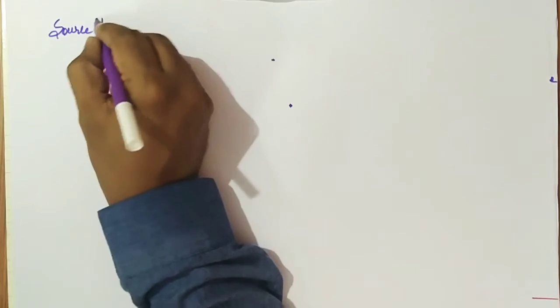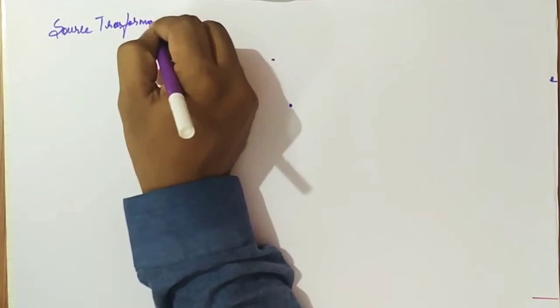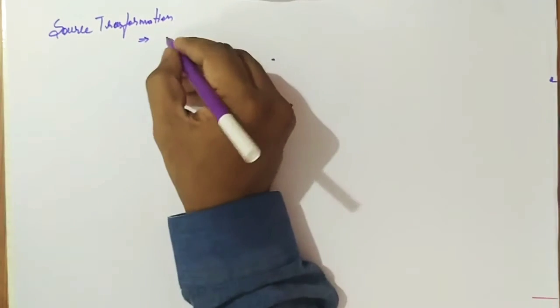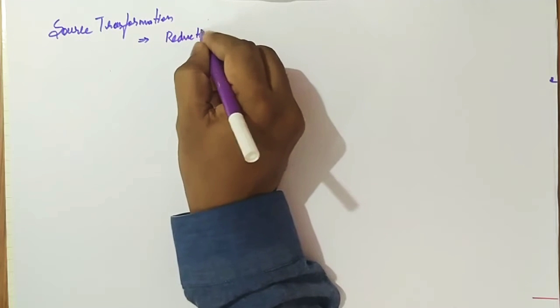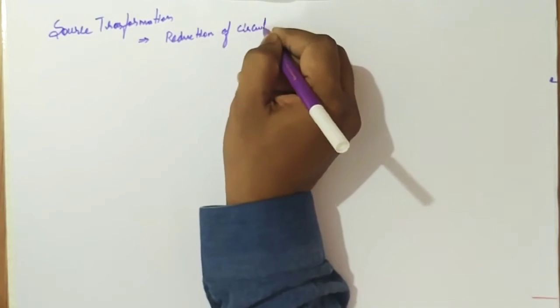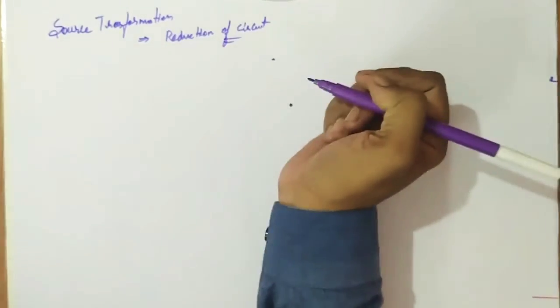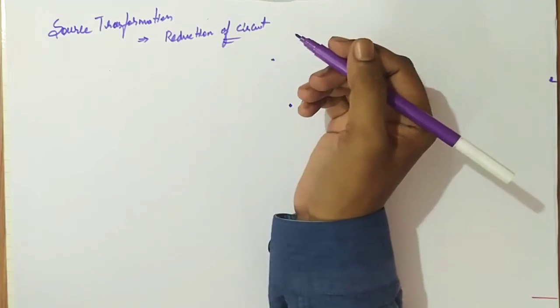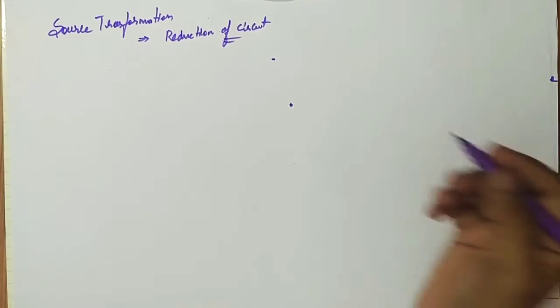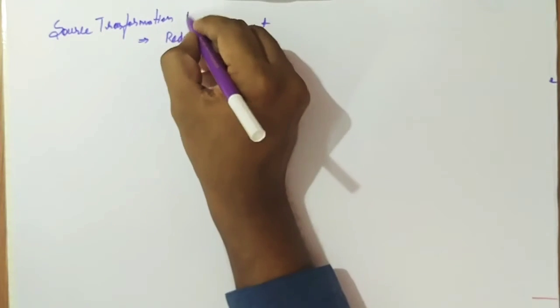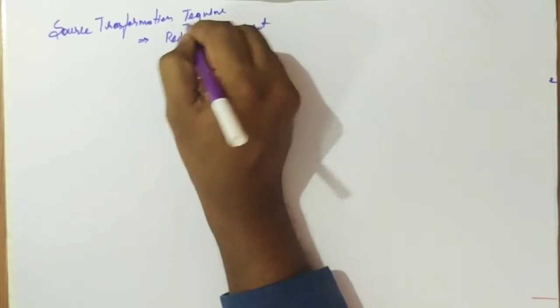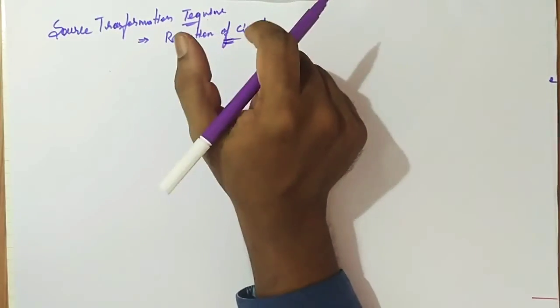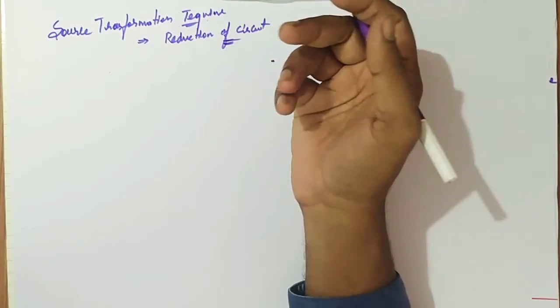Welcome back. Now we'll cover an important topic called source transformation. Source transformation is one of the methods used in reduction of a circuit. We use the source transformation technique to reduce the circuit according to our simplification needs.